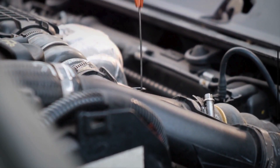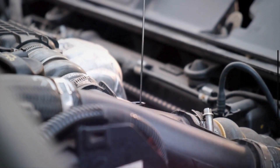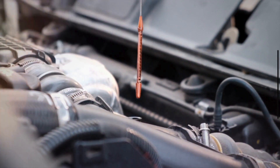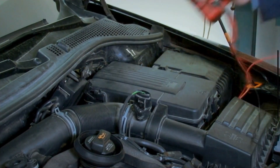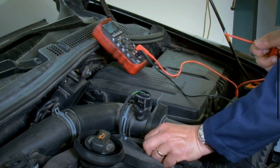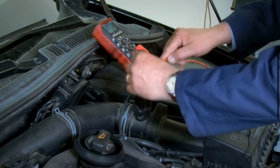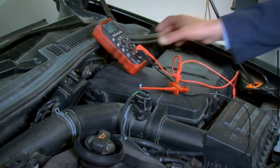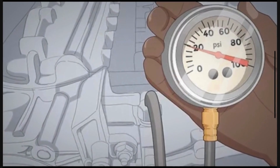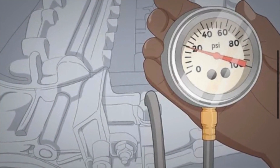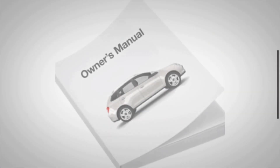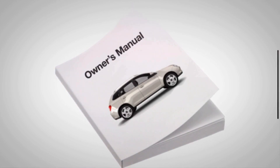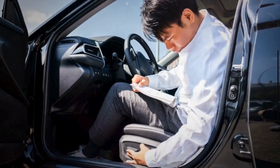To fix the PO522 code, firstly check the oil level and quality. If it's low, top it up with the correct type of oil. Next, inspect the oil pressure sensor and its wiring, looking for any visible damage or corrosion. If everything looks good but the code persists, you might need to replace the sensor. You may also use an oil pressure gauge to manually check the oil pressure and compare your readings to the manufacturer's specifications. If the pressure is low, you might have a more serious mechanical issue.